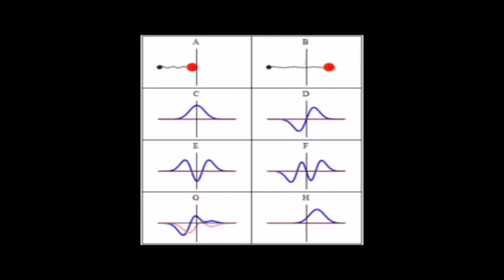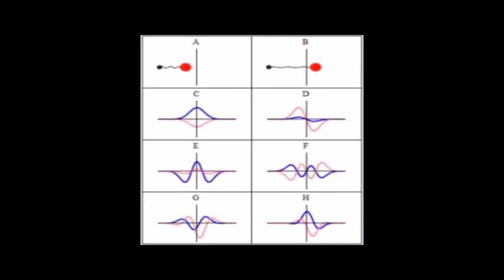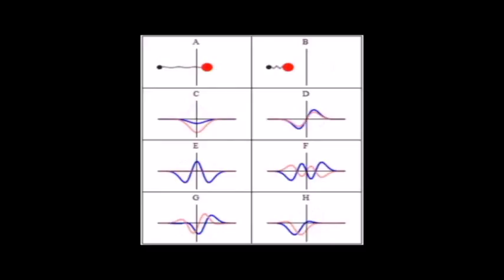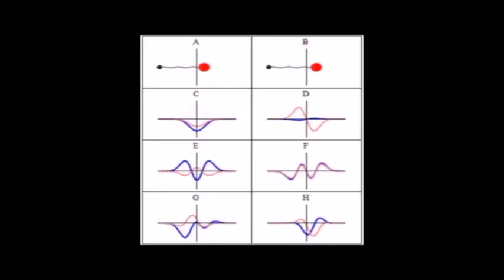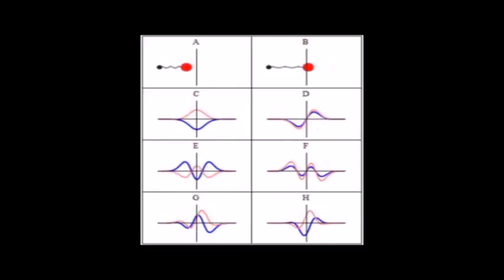We can see that in the graph of the wave function, where the amplitude of the wave is high, it means that the probability of finding the particle there is more.